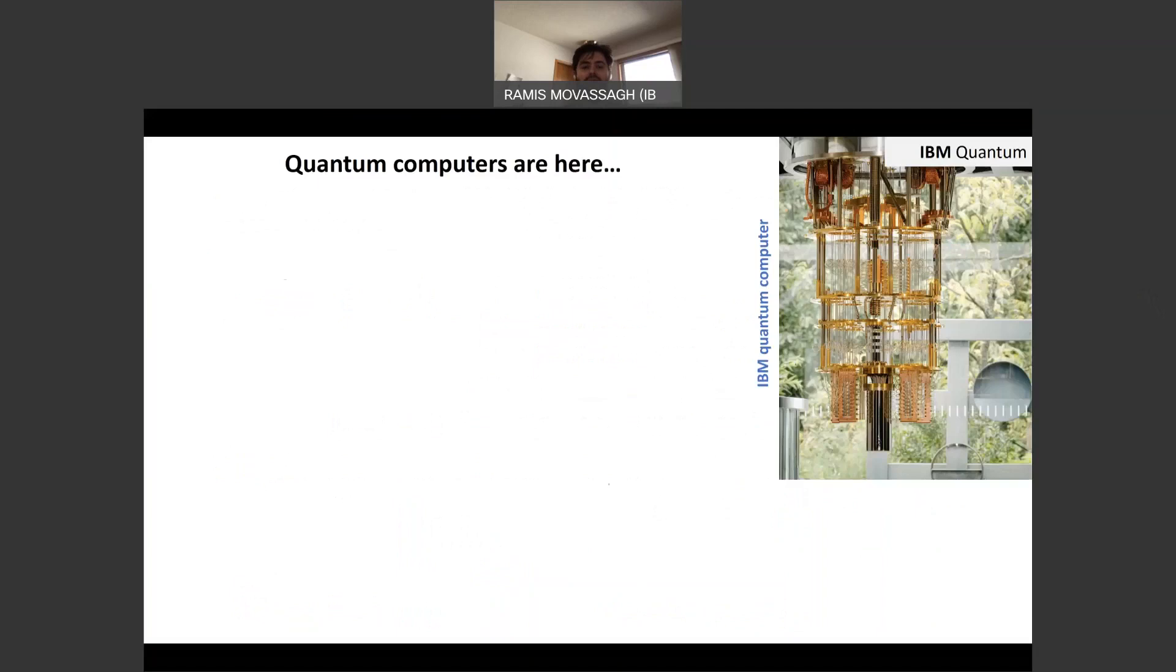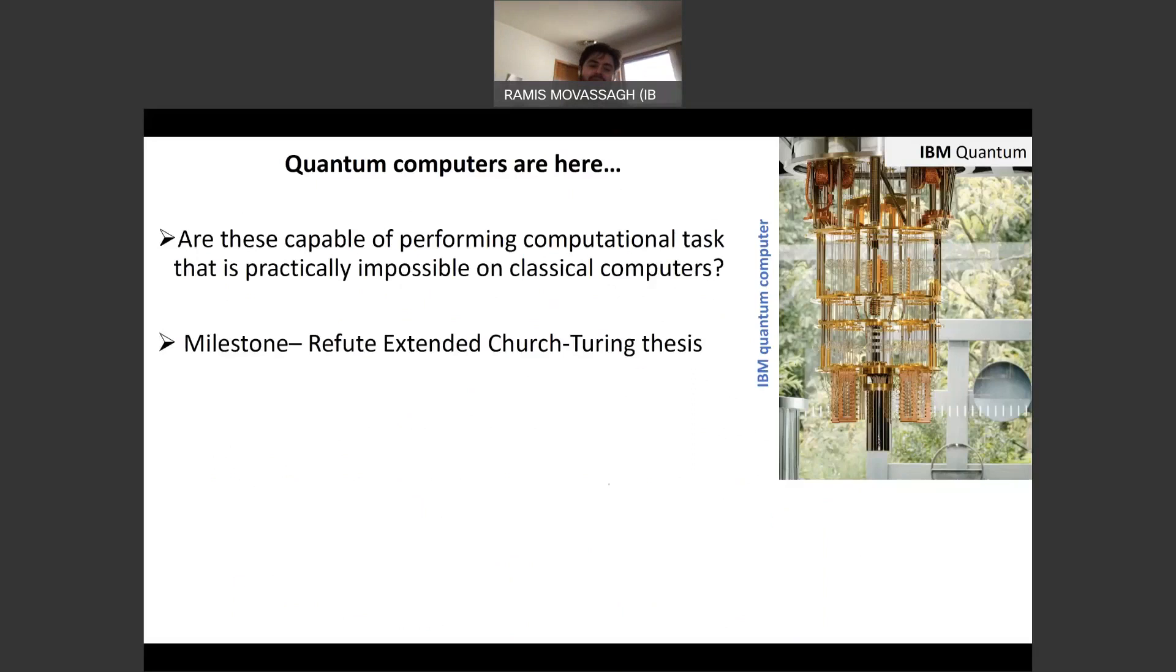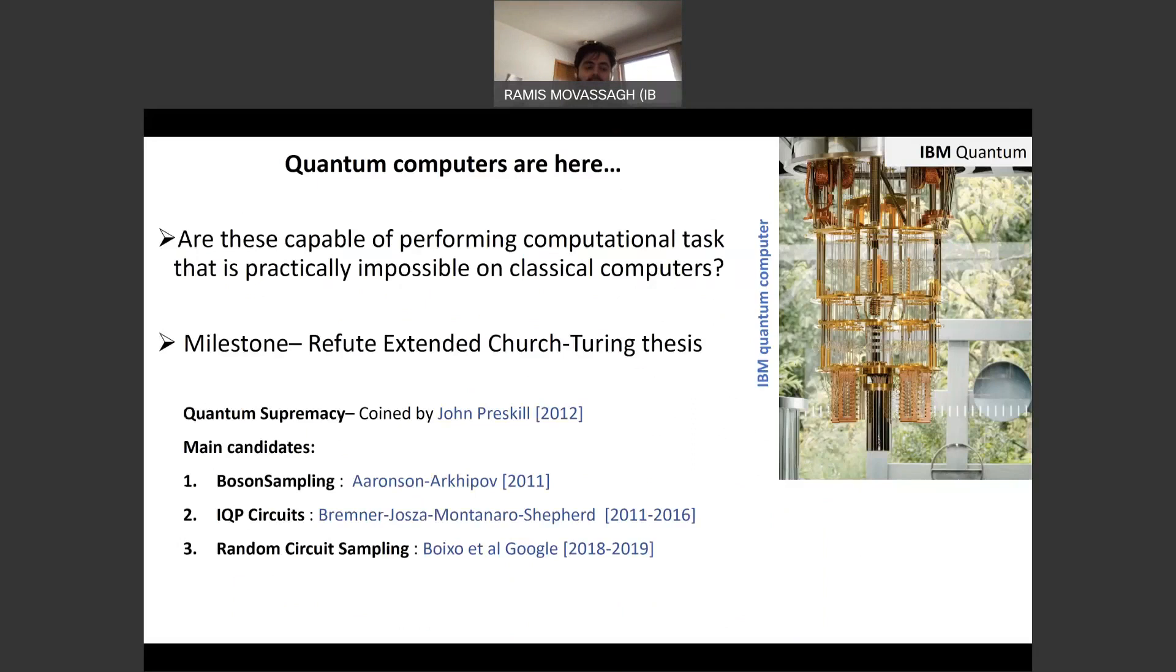So now that quantum computers have arrived, the question that has been in the field is: are these capable of performing computational tasks that are practically impossible on any classical computer? And if one could show an exponential separation between the power of quantum computers and classical computers, this will refute the longstanding extended Church-Turing thesis, which basically says anything that happens in nature, you can compute in polynomial time on a Turing machine. So the term was coined by John Preskill, quantum supremacy.